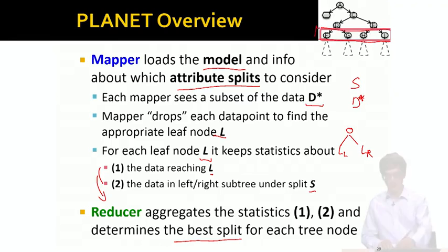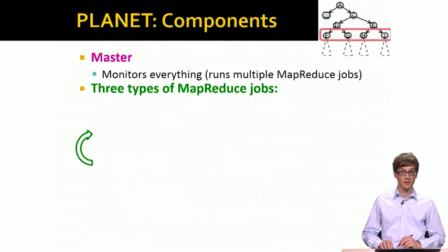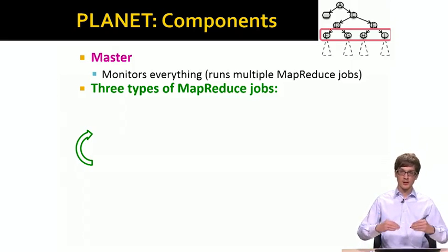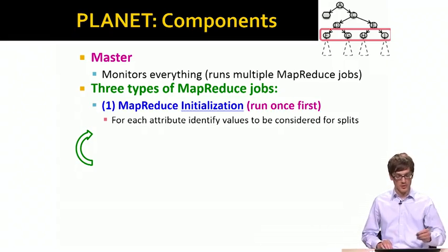The idea is that we are currently looking, let's say, at the third level or fourth level of the tree. Now that I told you about what the mapper is doing and what the reducer is doing at one level of the tree, now how are we building the whole tree? The whole procedure breaks down into three types of MapReduce jobs.